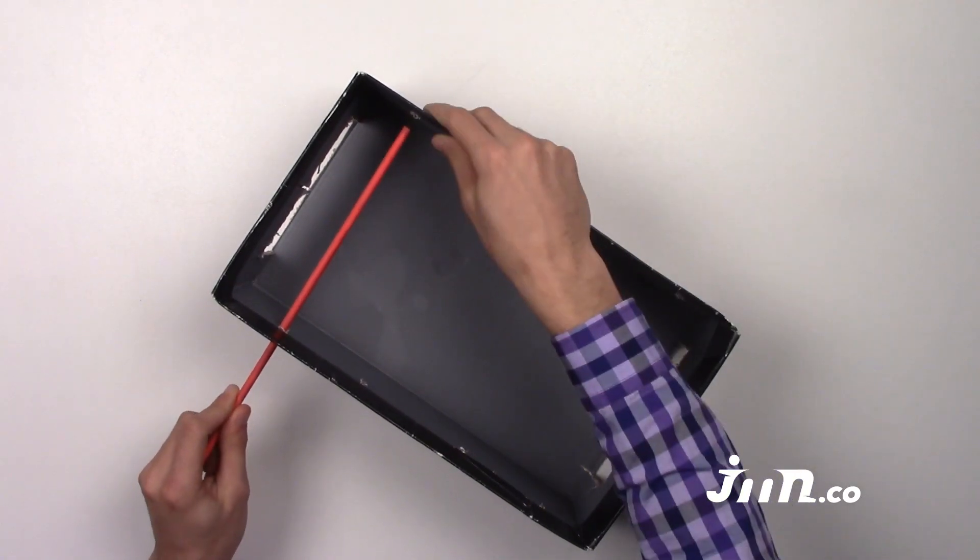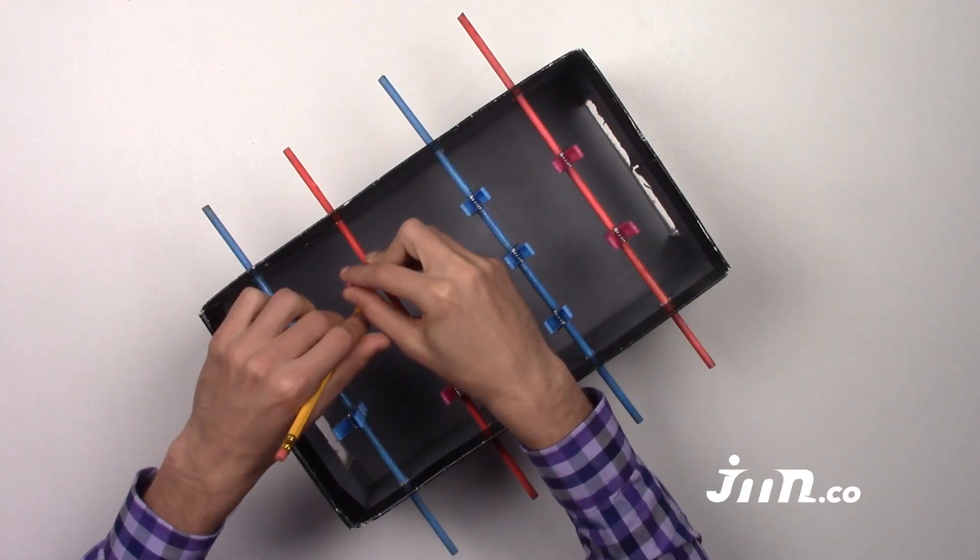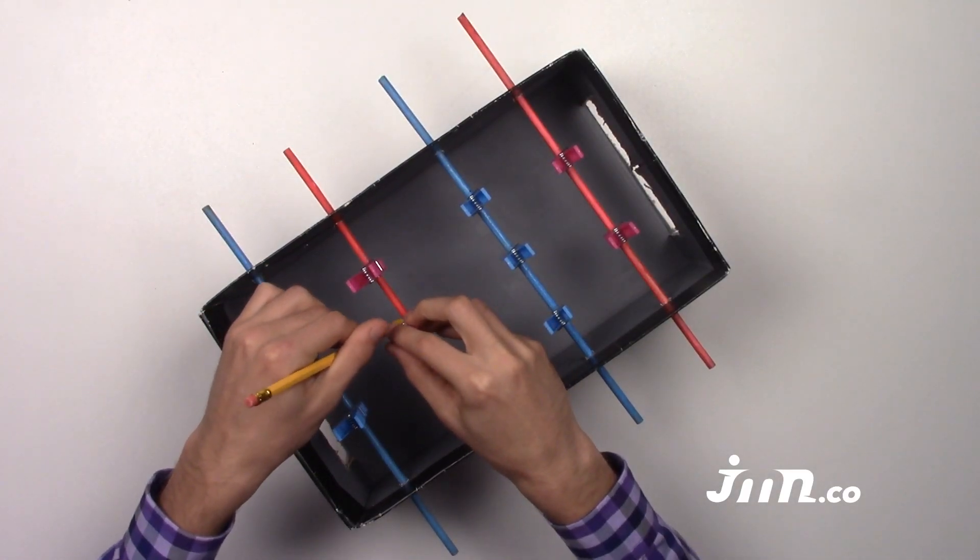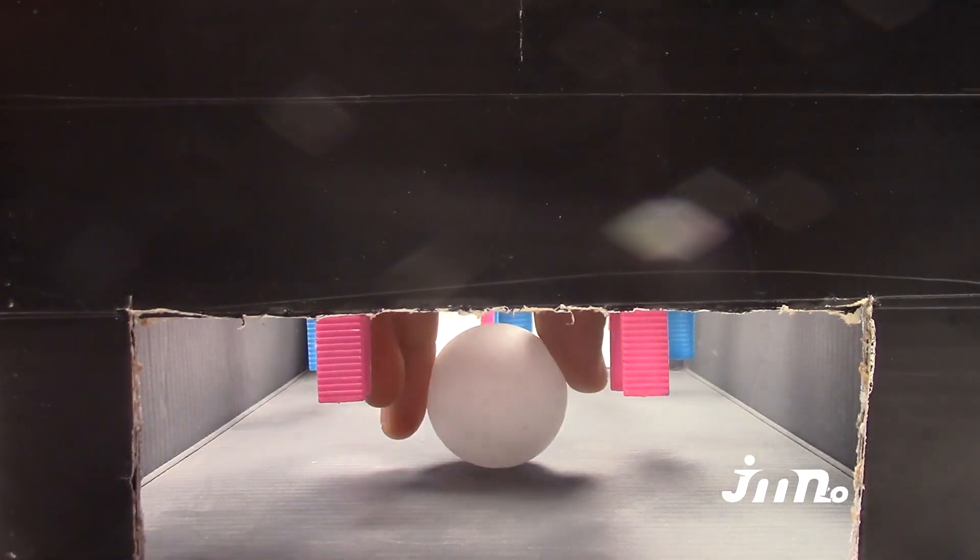Step 9: After everything is dry, put the sticks and clothespins in their proper place. Mark the spot for each clothespin and glue it into place. Step 10: Put rubber bands, tape, or the pencil eraser caps at the ends of the sticks. The game is ready to begin. Have fun!